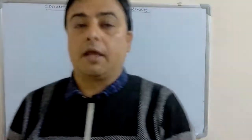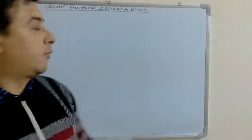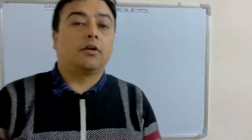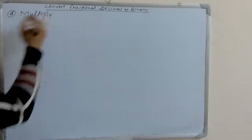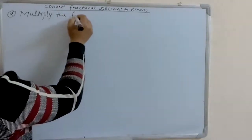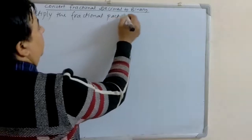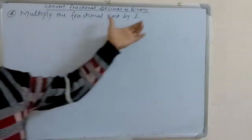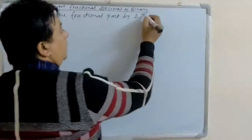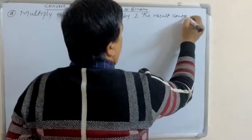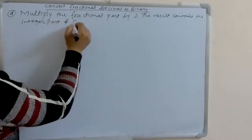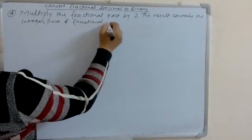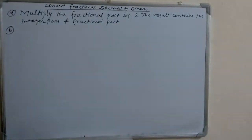To convert fractional decimal to binary, there are certain rules that we have to follow. After following those rules, we can easily convert fractional decimal to binary. The first rule is: multiply the fractional part by 2. The result contains the integer part and fractional part.